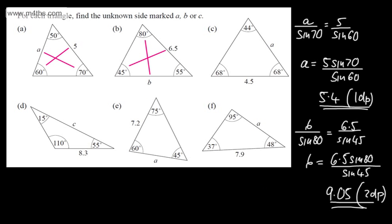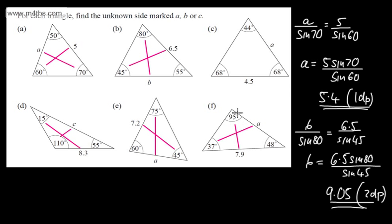Looking at the remaining examples quickly: C over sine 110 equals 8.3 over sine 15. A over sine 75 equals 7.2 over sine 45. A over sine 37 equals 7.9 over sine 95. A over sine 68 equals 4.5 over sine 44. So we're using the sine rule to find missing lengths in non-right-angle triangles.